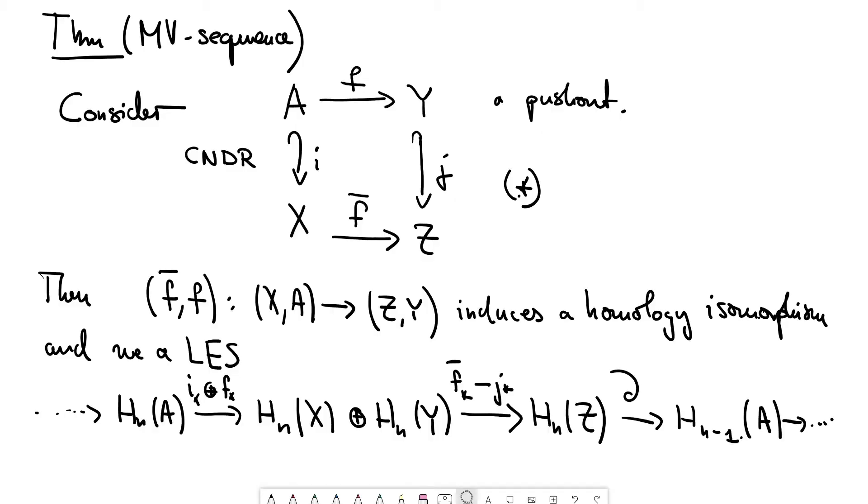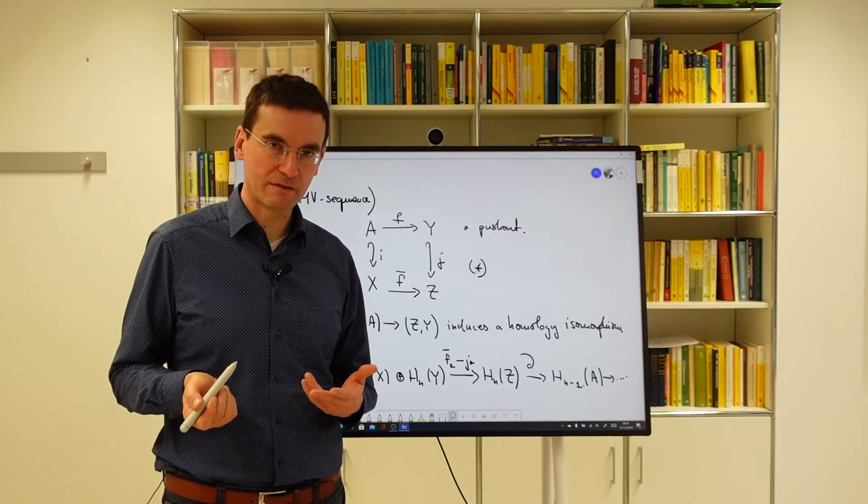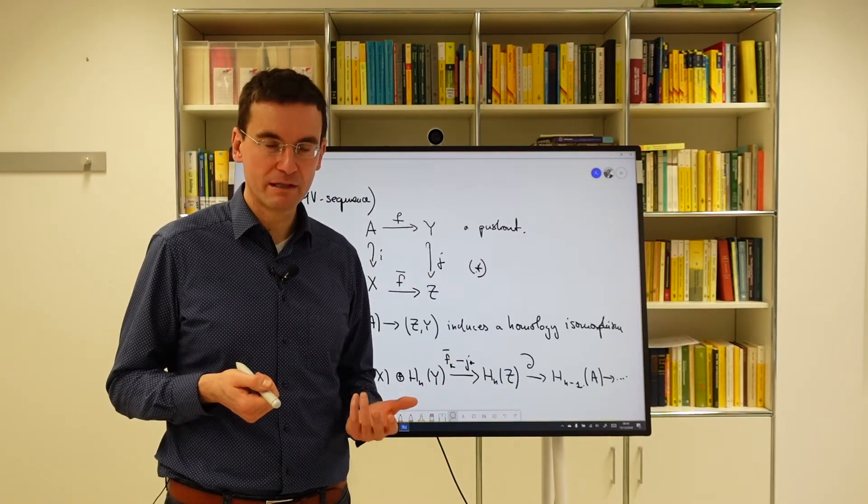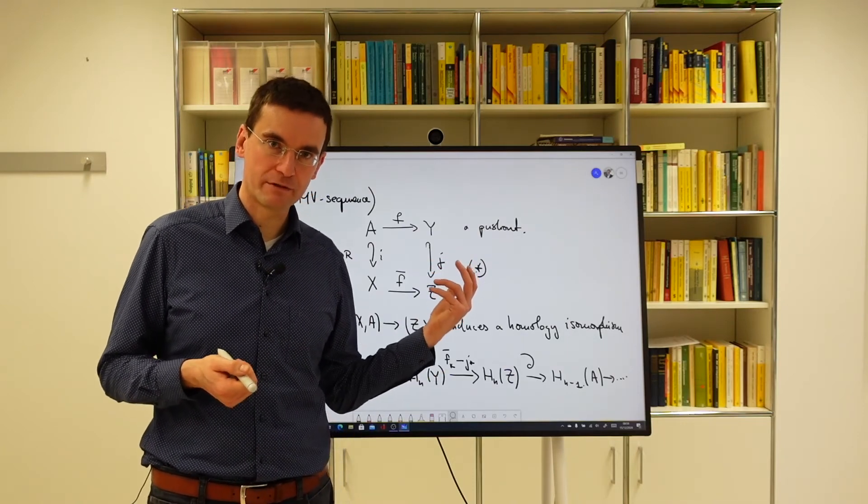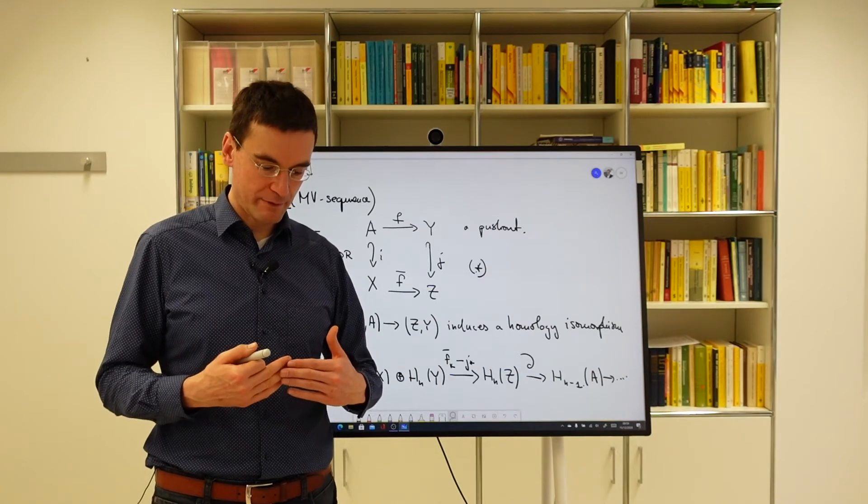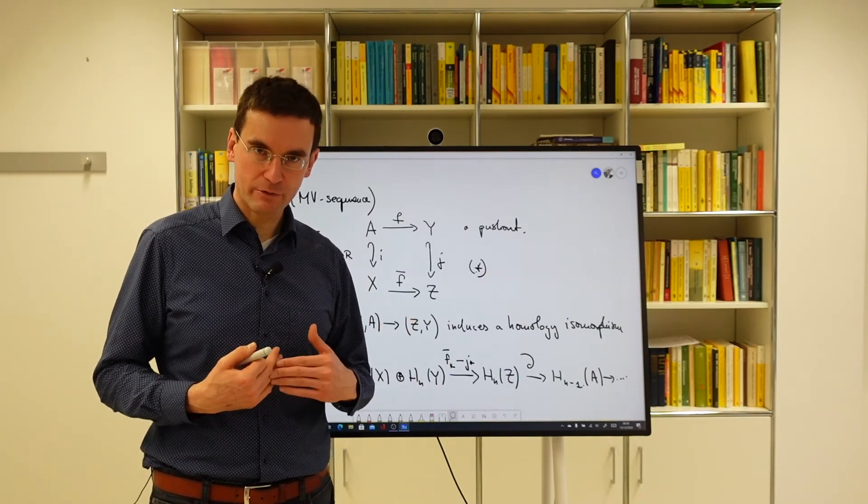Suppose we already have proven the first fact that this is a homology isomorphism. Then the proof of this long exact sequence is really the same as for the Mayer-Vietoris sequence of an excisive triad. So there we looked at triple sequences which was only necessary because we wanted to prove a relative version. Here we are talking about an absolute version.